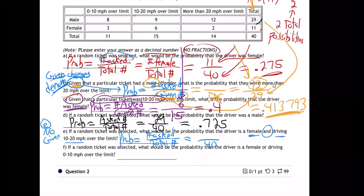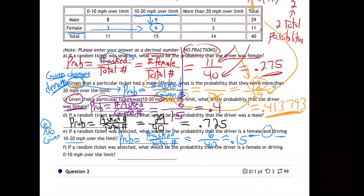Would it be six? Yeah, that's right — right there. 10 to 20 over the limit and female — they're 10 to 20 over the limit and they're female, so that's six people. There are six people out of the total 40. Out of the 40 tickets, six of them are females who drove 10 to 20 over. Six divided by 40, I'm getting 0.15.